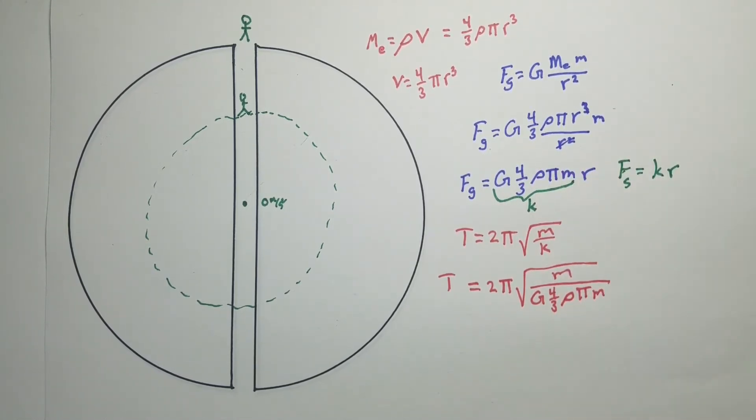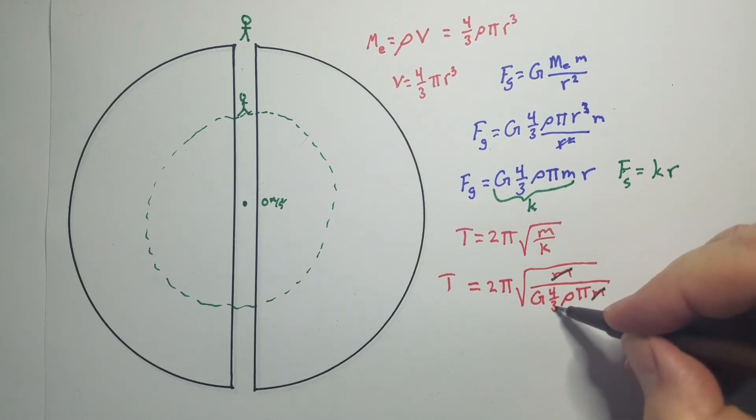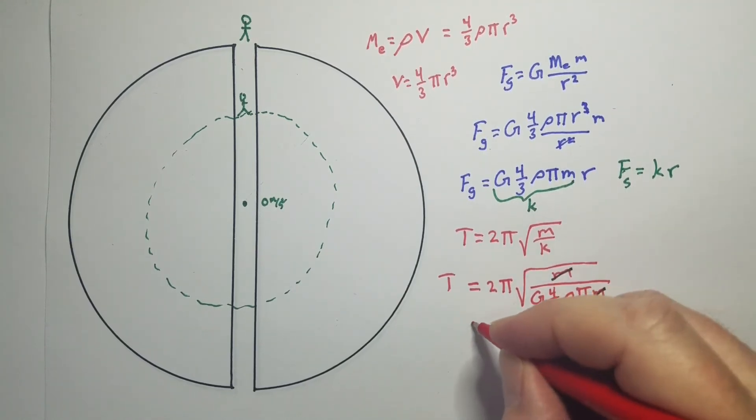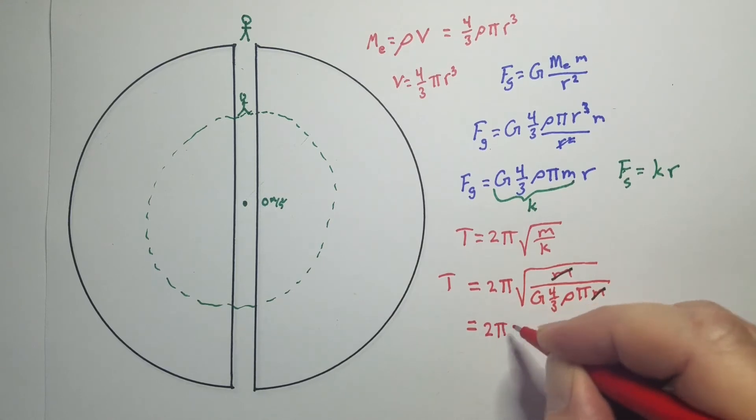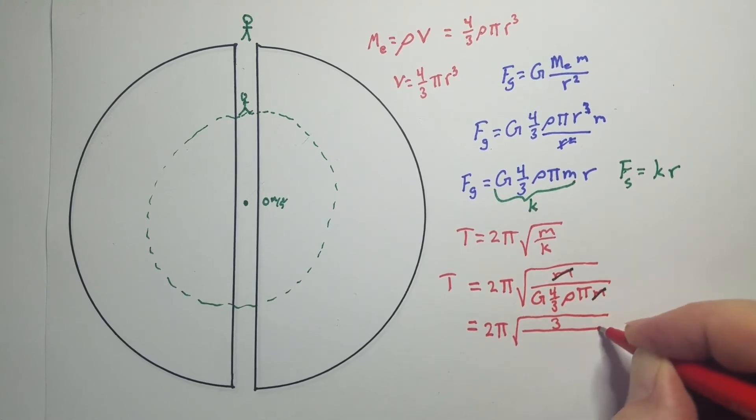So that's our entire k value put into the bottom. We can do some cleaning up here. We've got the mass of the person here and the mass of the person there because that would be the mass on the spring, which would be the person in this case. So they cancel out. That 3 will actually flip up to the top. And so I want to do two rounds of cleanup. The first round is just the cleanup underneath the square root. So we've got 2 pi square roots. That 3 will come up top. And down at the bottom, we would have universal gravitational constant. Density of the earth. Don't forget the 4. And pi.